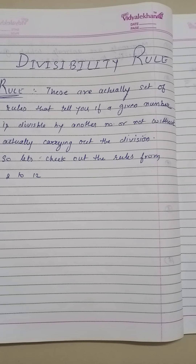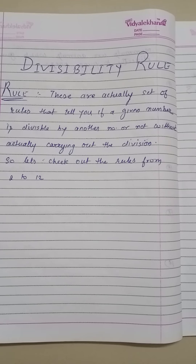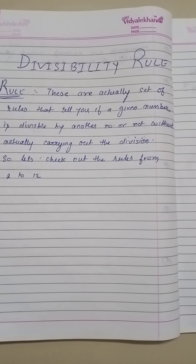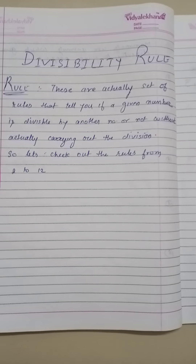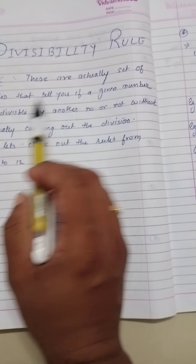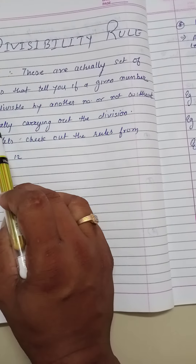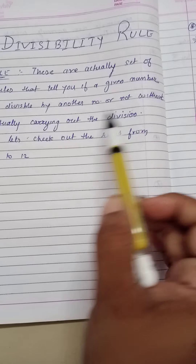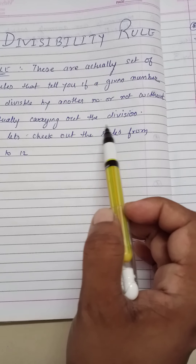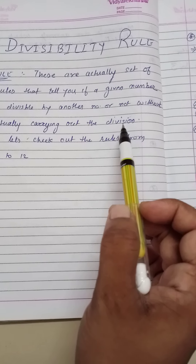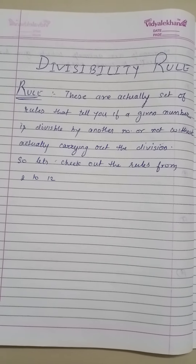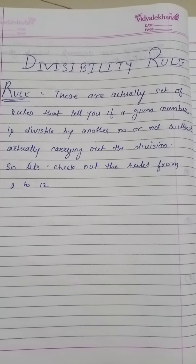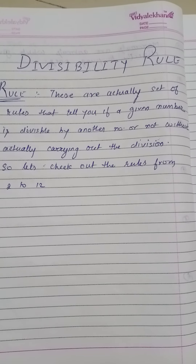Hello students, welcome back to yet another video session of mathematics for grade 6. This is for chapter 3 and we are going to understand the divisibility rules. Divisibility rules are actually the set of rules that tell you if a given number is divisible by another number or not, without actually carrying out the division. We have divisibility rules all the way from 2 till 12 and we are going to study each one of them one by one.